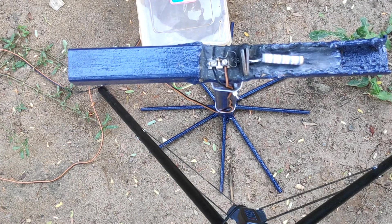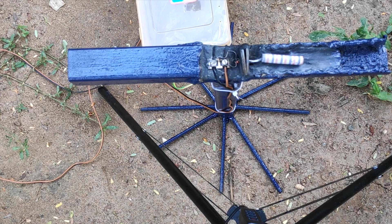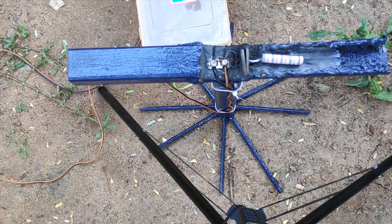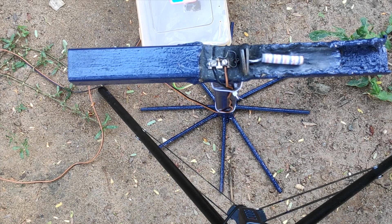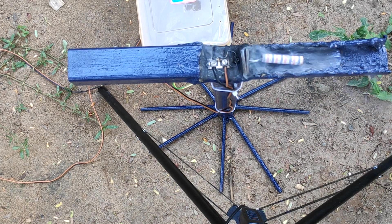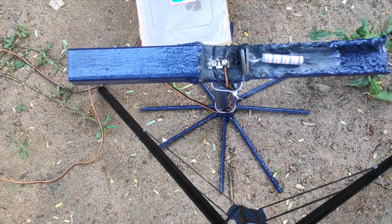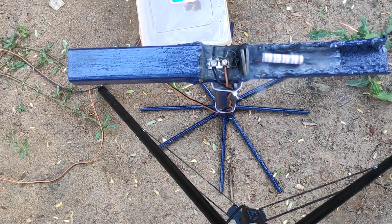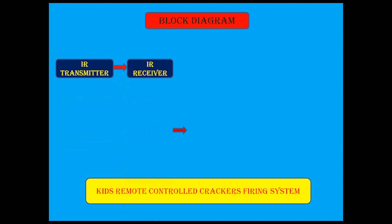Welcome to Learn Electronics Daily. IR Remote Controlled Crackers Firing System. This device consists of the following parts: IR transmitter, IR receiver, mono-stable multi-vibrator relay unit, and firing or ignition system.